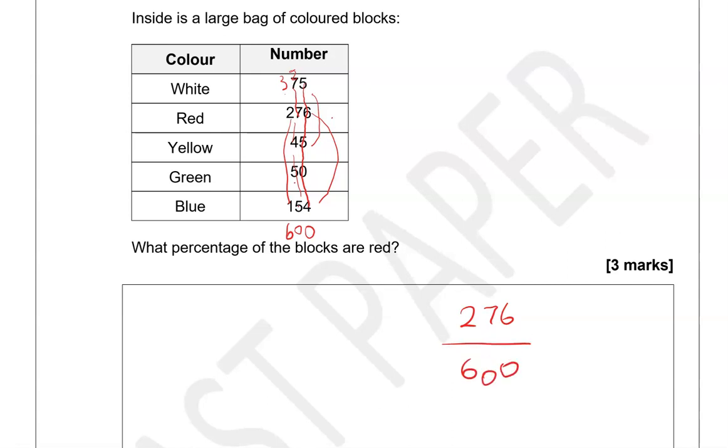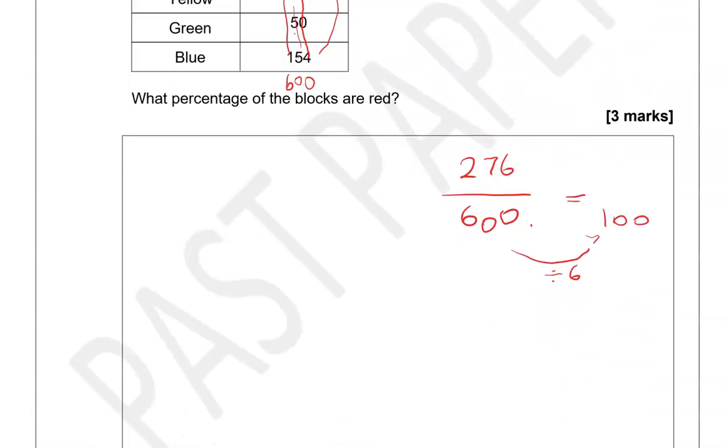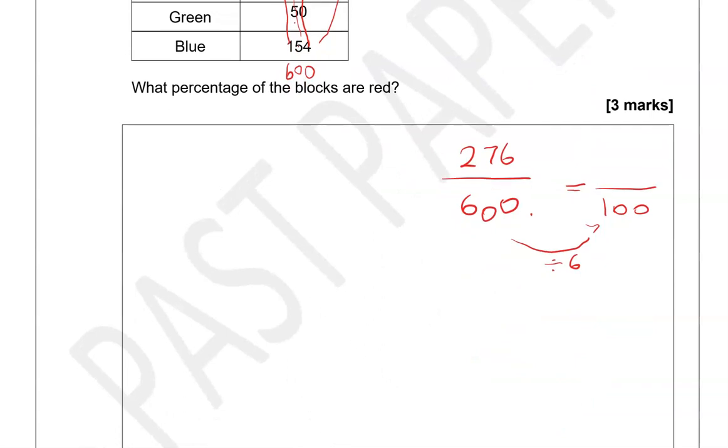276 by 600 without a calculator is perhaps not going to be the easiest thing to do. So we want to get to a point where we have a fraction that has 100 here at the bottom. So we're going to simplify this to get to that point. To get from 600 to 100 we divide 600 by 6. So we're going to see whether we can do that with 276.